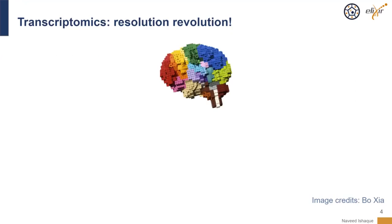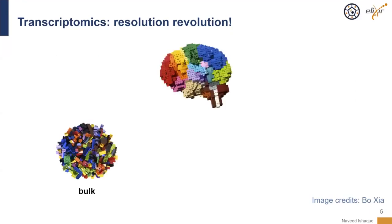Here we have a cartoonish representation of the different tissue niches that would be containing different cell type compositions within the brain. Traditionally, we've been using bulk sequencing omics to profile these tissues. By and large, this technology is sufficient to answer many questions, as long as the gene expression differences are occurring in a large number of cell types, or if the gene expression changes are very large.